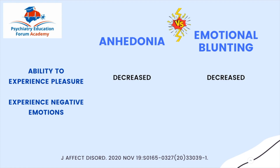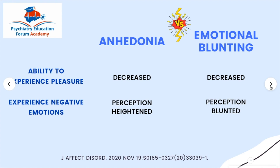What differentiates them is their ability to experience negative emotion. In anhedonia, a person has a heightened perception of negative emotion. But in emotional blunting, even these negative emotions are blunted — the perception is blunted. Always ask about this when you need to differentiate anhedonia from emotional blunting.